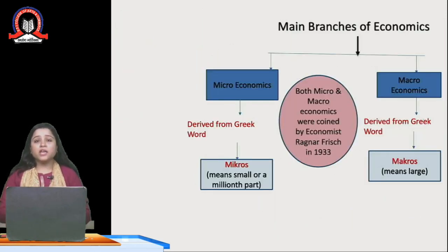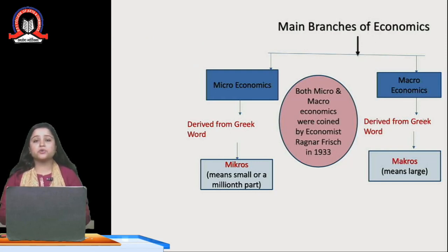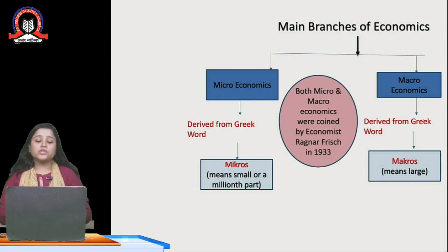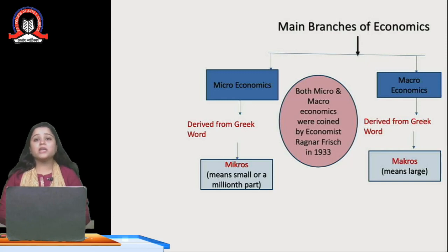Basically, in economics there are two branches: micro and macroeconomics. Both these terms were coined by economist Ragnar Frisch in 1933. Micro and macroeconomics are both derived from Greek words. Micro is derived from the Greek word 'micros', which means small or a millionth part. And macro is derived from the Greek word 'makros', meaning large.